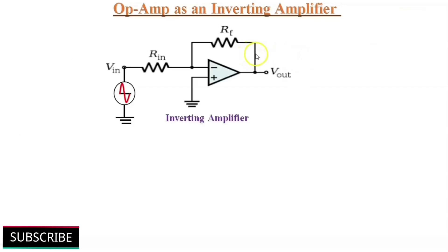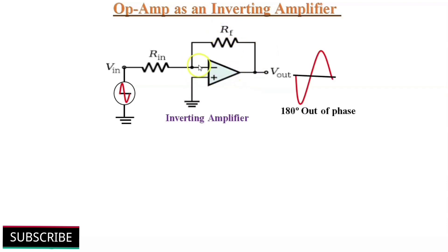An op-amp can be operated as an inverting amplifier as shown in the figure. An input signal Vin is applied through input resistor Rin to the inverting terminal. The output is fed back to the inverting input through feedback resistor RF. The non-inverting input is grounded. The feedback resistor RF provides negative feedback. Since the input is applied at the inverting terminal, the output will be inverted, that is 180 degrees out of phase as compared to the input. Hence the name inverting amplifier.